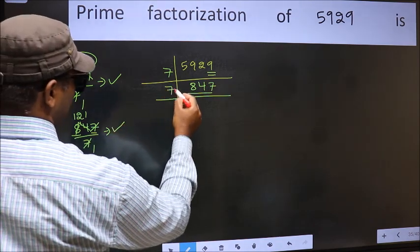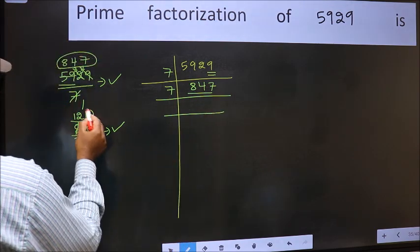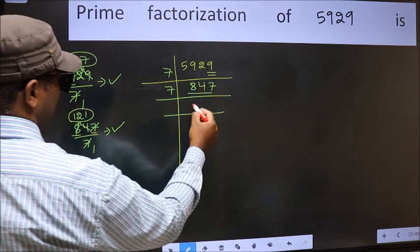So 7 here. And here we should write this number 121.